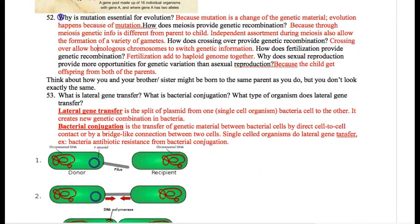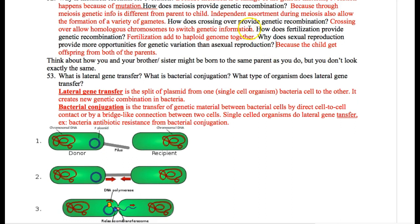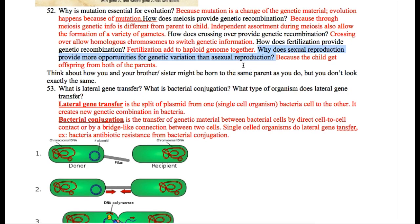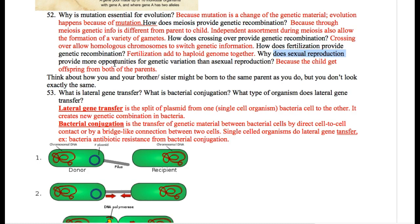Why is mutation important? Mutation gives you the possibility of evolution. Why does sexual reproduction provide more opportunities for genetic variation than asexual reproduction? Because asexual reproduction generally only gives you exact copies of the original organism, unless there is conjugation or mutation. For sexual reproduction, you know there's going to be some kind of difference. You and your brother and sister might all share the same parents but you never look the same — there are many differences between siblings because of the variations that the sexual reproduction process provides.